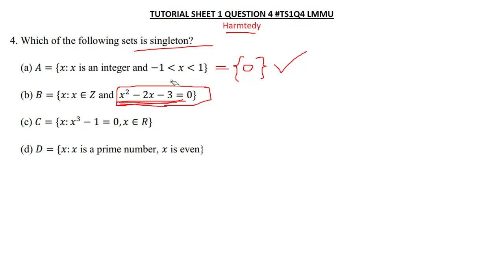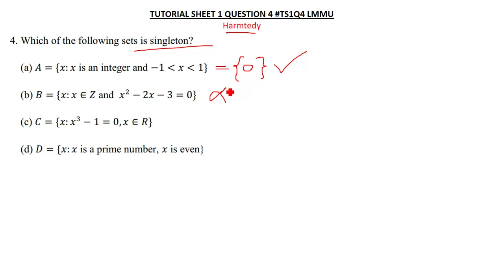When you solve this equation, you find the solutions to be negative one and three, meaning you have two solutions. So this is not a singleton set. If you don't know how to solve quadratic equations, you can message me on Telegram or WhatsApp and I'll send you a video explaining how. So B is not a singleton set because it contains two elements.